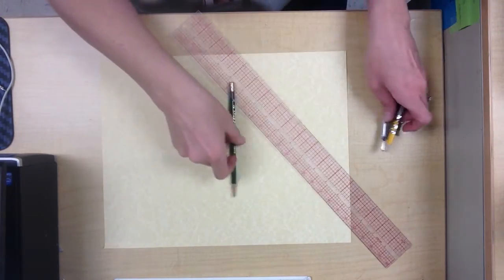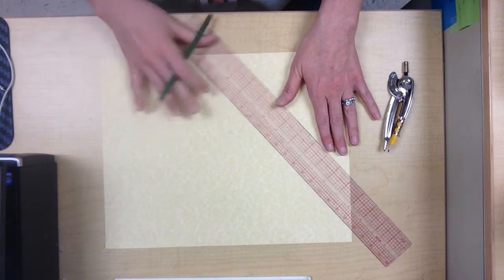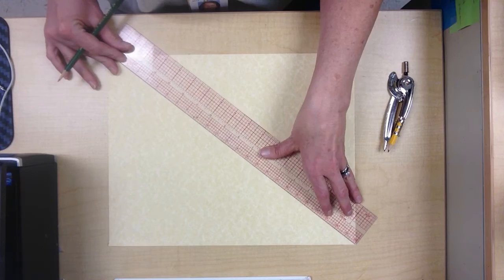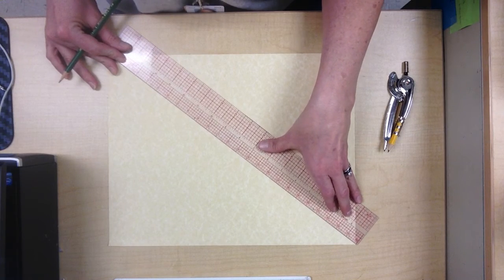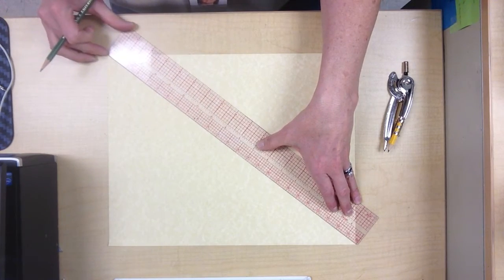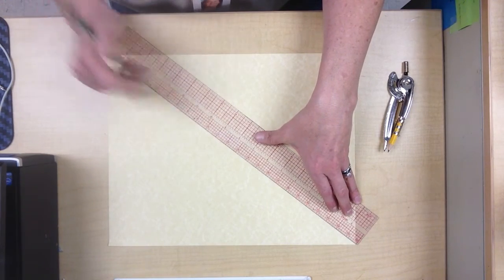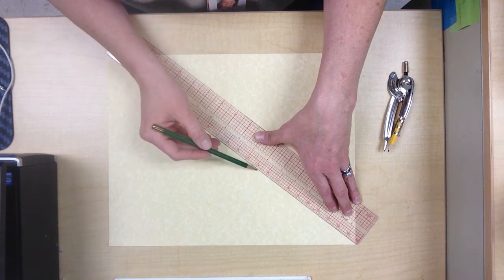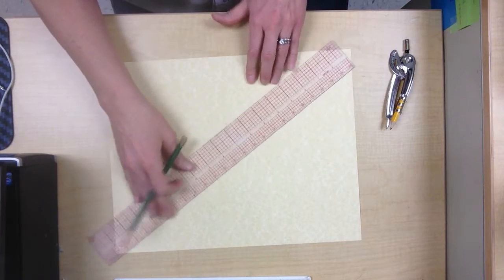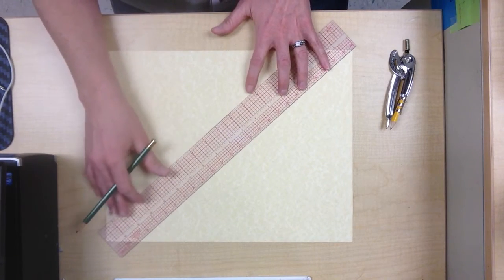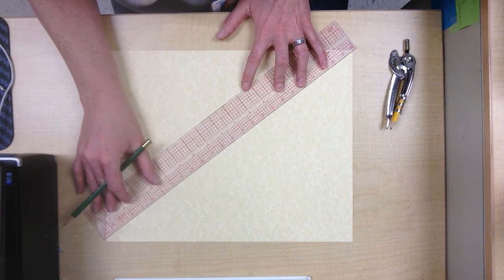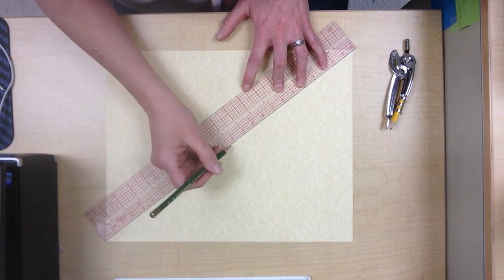Okay, so the first thing I want to do is find the center of my paper. To do that, just like we learned in geometry, you're going to line your ruler up to the corners that are located diagonally from each other and just make a nice light mark in the center. Then do the same thing going the other direction. Where those two lines intersect is where the center of your paper is.